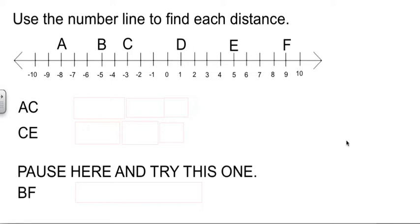So let's do a couple of those, and then we'll let you try one. I want the distance from A to C. A is at negative 8, C is at negative 3. So the absolute value of negative 8 minus negative 3. Subtracting that gives me negative 5, and the absolute value of that is 5. So the distance from A to C is 5.